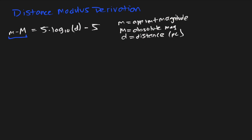In this video we'll be going through the distance modulus formula derivation. If you don't know what the distance modulus is, I suggest going back to my other video on the distance modulus. The distance modulus equation is apparent magnitude minus absolute magnitude, equal to five times log base ten of the distance minus five.